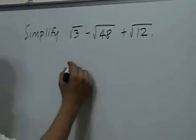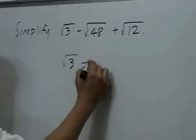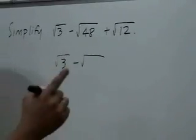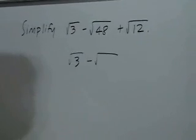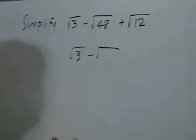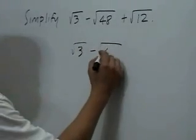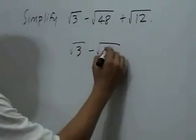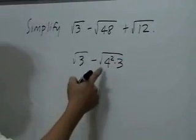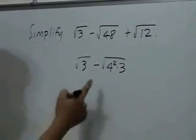We will retain square root of 3. We will write 48 as the product of two factors, one being a perfect square because this is a square root. And 48 can be written as 16 times 3, with 16 being a perfect square, or 4 squared.